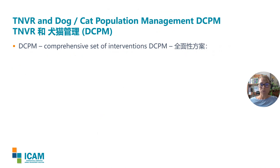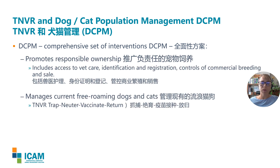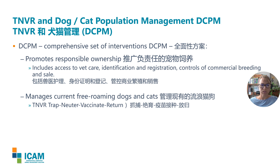Dog and cat population management combines several interventions to comprehensively address different sources of free-roaming and unwanted dogs or cats. It includes interventions promoting responsible ownership, such as affordable vet care, identification and registration, and controls on commercial breeding and sale — upstream actions to prevent animals from becoming stray in the first place. But there are already stray dogs and cats that need to be managed, and this is where trap, neuter, vaccinate and return — TNVR, also called CNVR or ABC in other countries — plays its role. This is a core intervention that directly mitigates disease risk and prevents current stray animals from breeding and producing future strays. I'm going to focus on TNVR and how it manages disease risk today.